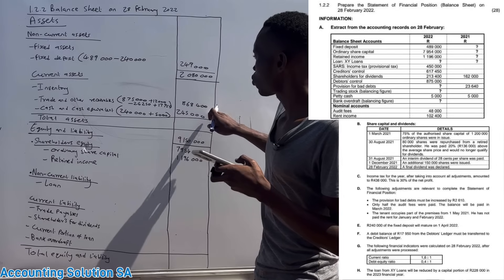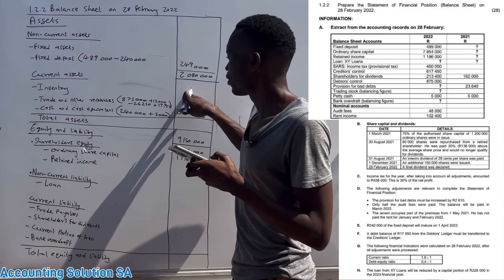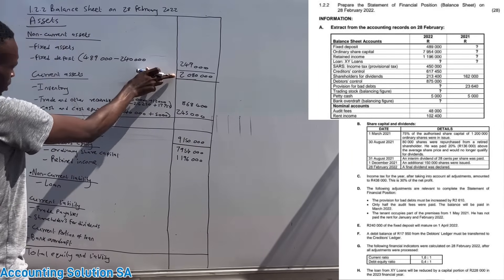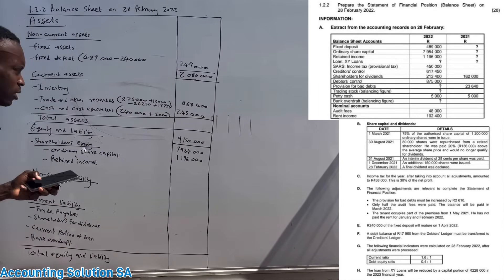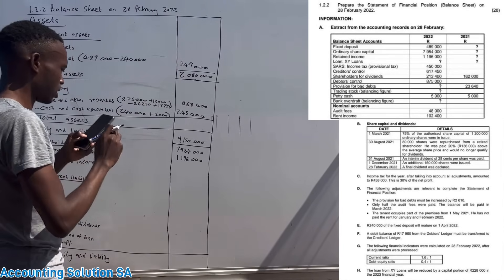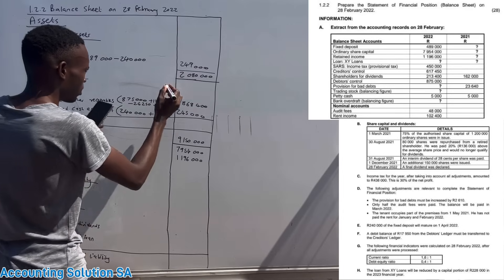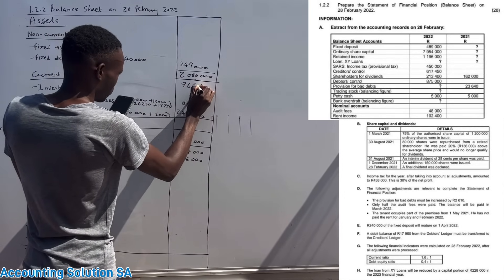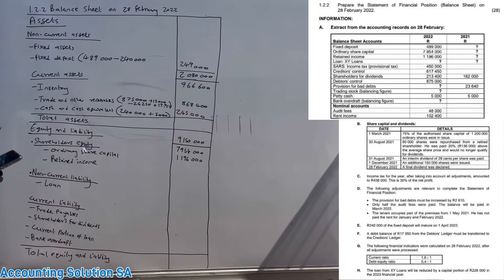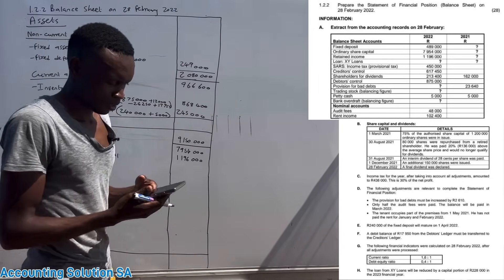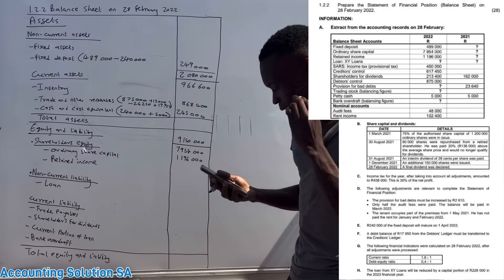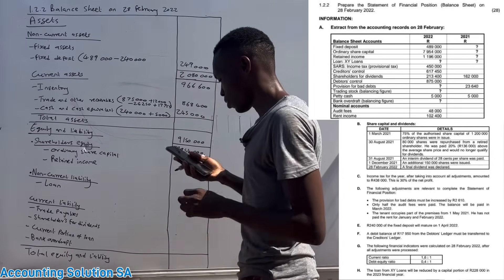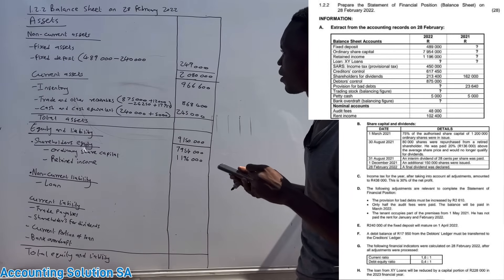We already have those two items but we haven't got inventory yet. Inventory can be found as a balancing figure because they give us the total current assets balance. You take the total current assets and subtract the rest, giving inventory as a balancing figure of 966,600.